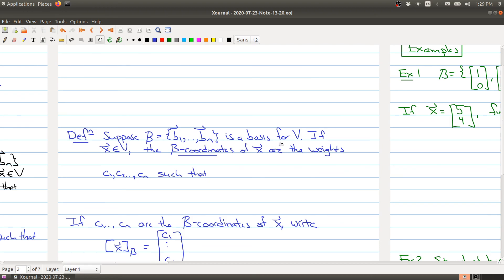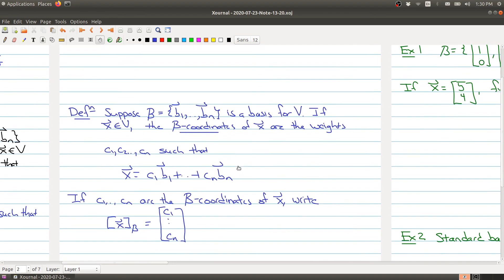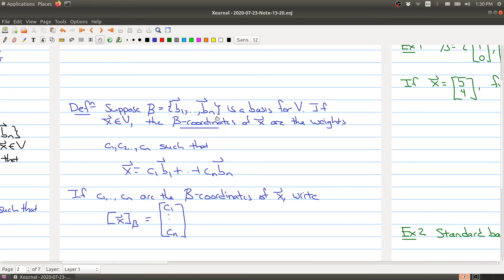So suppose that we have a basis, and if x is some element in V, then the B coordinates of x are the weights such that x can be written as c1 times b1 up to cn times bn. So the theorem tells me that there's only one way to write x, and what we want to do is say those numbers are the B coordinates. So they're a set of n numbers that get attached to the vector x. One way to think about the B coordinates is that you're given the basis and you're given the B coordinates, and it's the information that allows you to recover the x. So any vector x can be constructed just by knowing the scalars and the corresponding basis elements.